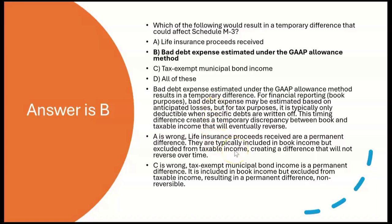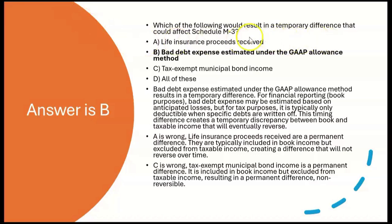A is wrong — life insurance proceeds received are a permanent difference because they're included in book income but excluded from taxable income, and this will not reverse. C is wrong — tax-exempt municipal bond income is a permanent difference: included in book income but excluded from taxable income, non-reversible. There will never be a year where municipal bond income is taxable, so it is a permanent difference. The only temporary difference here is B, bad debt expense estimated under the GAAP allowance method.